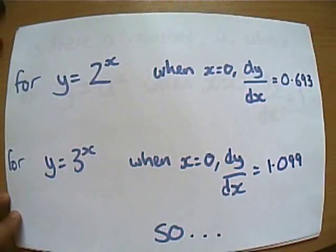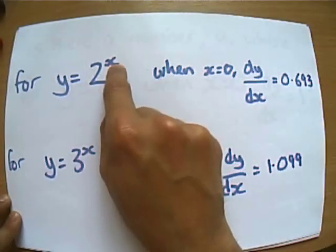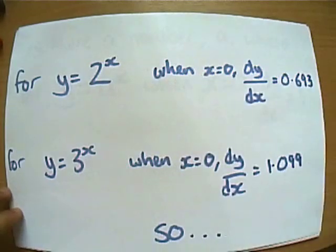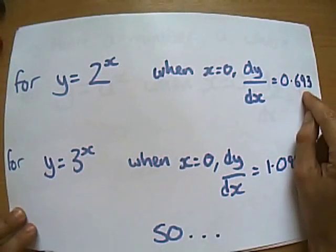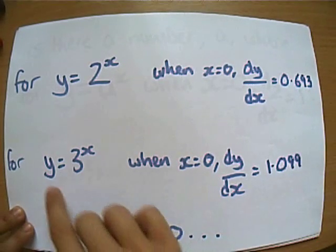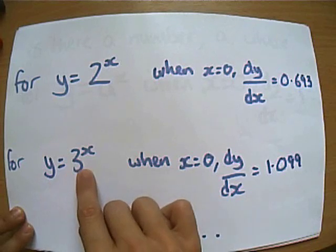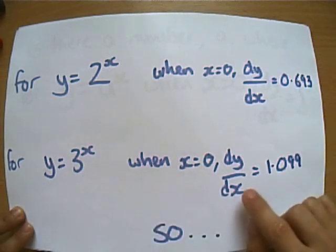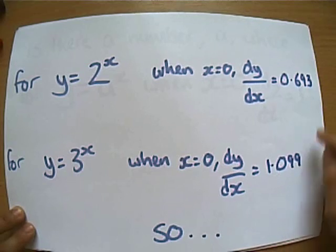What they found was, when you've got y equals 2^x, when x is 0, at that point where it crosses the y-axis, the gradient is 0.693. And they went away and did a bit more stuff. And they found that for y equals 3^x, when x was 0, dy/dx was 1.099.